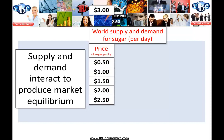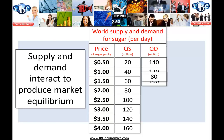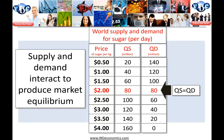Now, supply and demand — we know about our supply, we know about our demand, and where these two interact, they will produce the market equilibrium. So here we have the price of sugar per kg, the quantity supplied in millions of kgs per day, and the quantity demanded at each price, again in millions of kilograms per day. We can see there that at two dollars, quantity supplied equals quantity demanded. Equilibrium: quantity supplied equals quantity demanded.